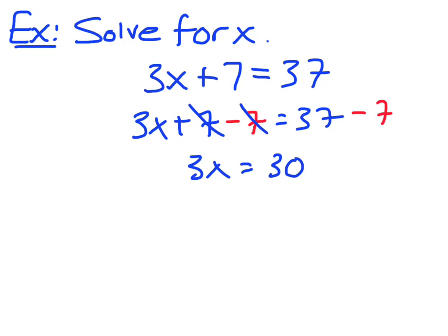Then I got 3 times x. So I want to make sure that in order to undo times, I divide by 3. Cancel, cancel. And I'm left with x is equal to 10. And that's my answer.